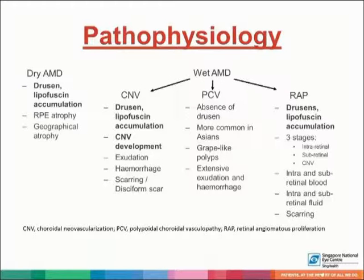For the pathophysiology, it can be divided into dry AMD as well as wet AMD. Dry AMD includes features such as drusen, lipofuscin accumulation, as well as retinal pigment epithelial atrophy or geographical atrophy. Wet AMD can be divided into choroidal neovascularization, otherwise known as CNV, polypoidal choroidal vasculopathy, PCV, or retinal angiomatous proliferation, RAP.